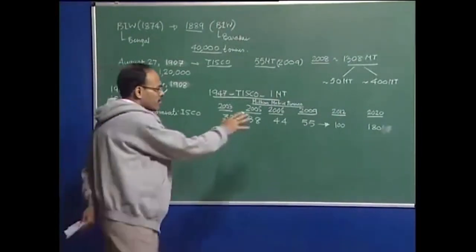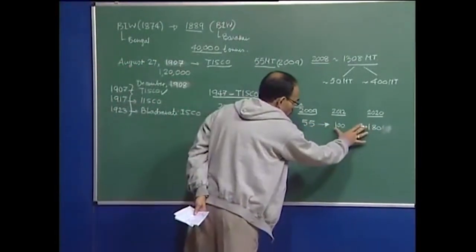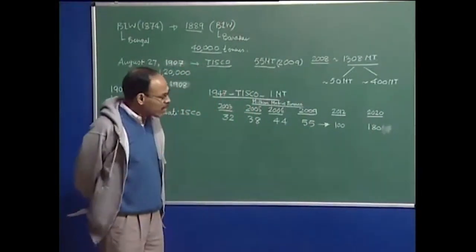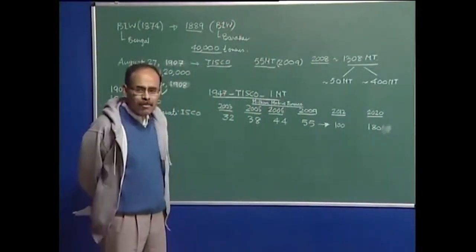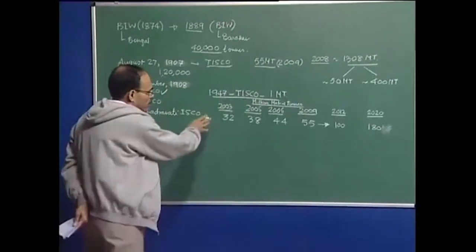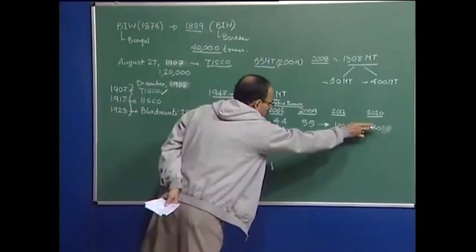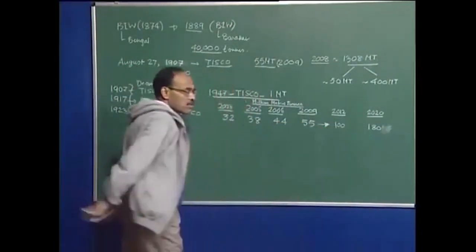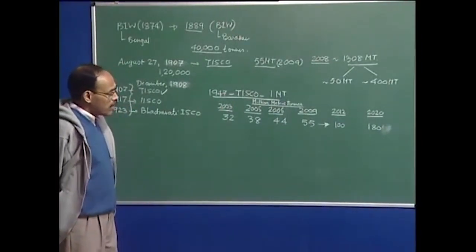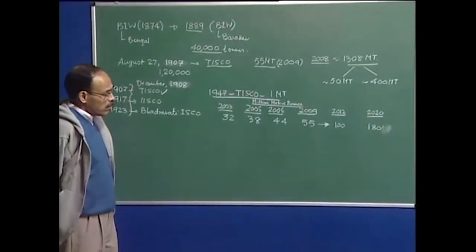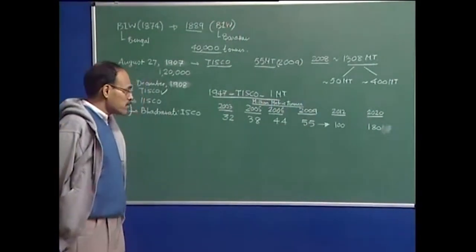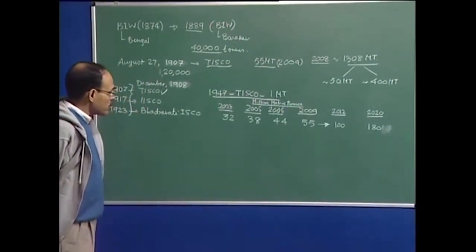We are going to examine what we have to do in order to achieve these targets, where we stand right now, what our problems are, and how difficult it is going to be for us to go to 180 million tons. Does it look too rosy, or are we really capable of doing it? That is what we are going to examine in these concluding lectures.